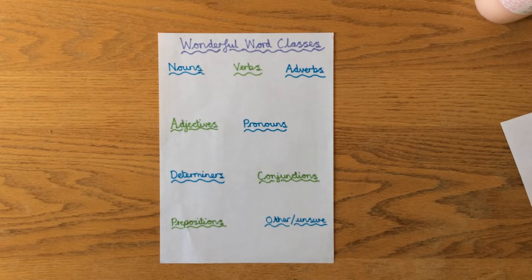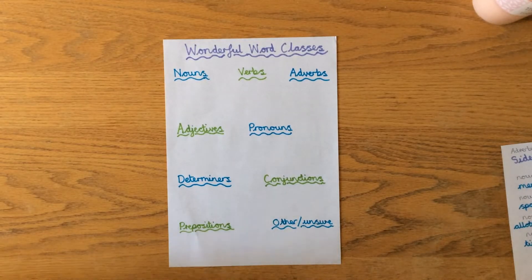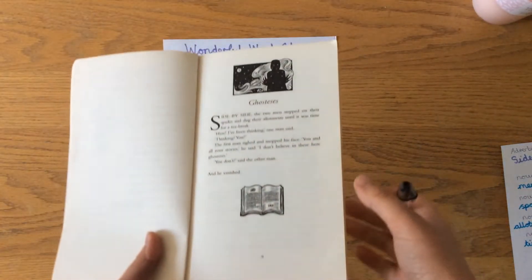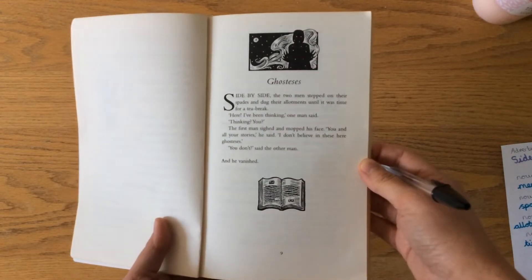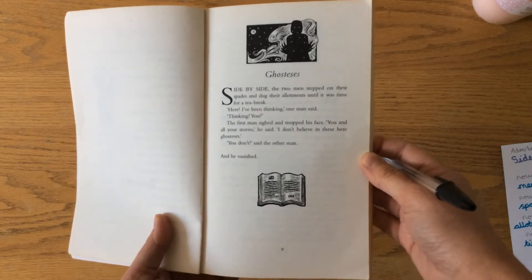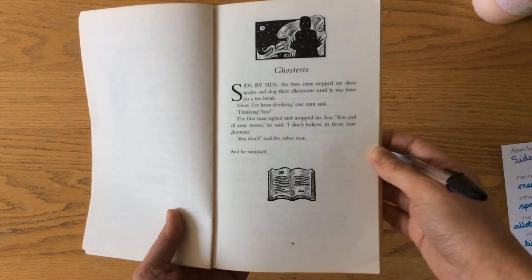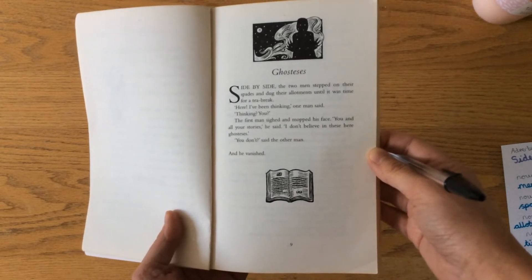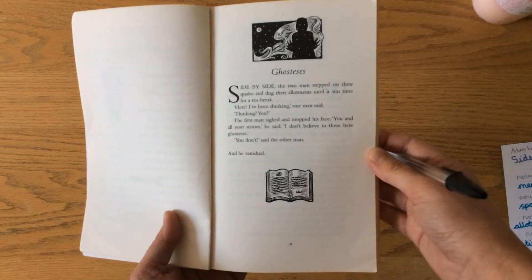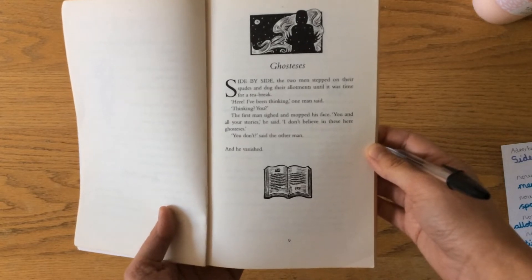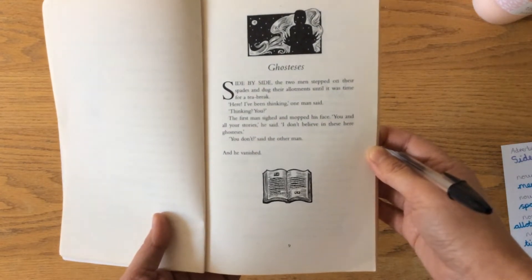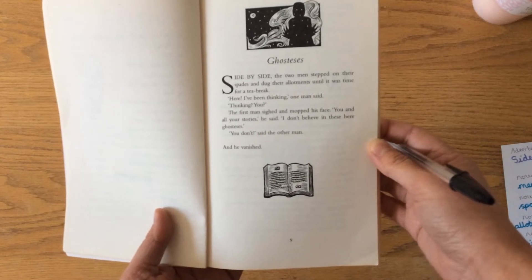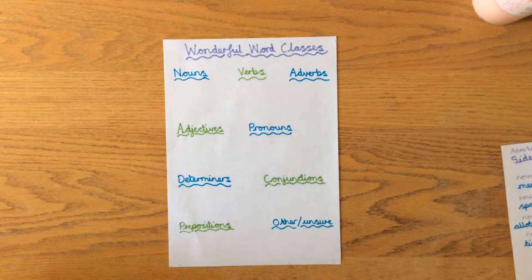Pause the video now and make yourself a list of all the different word classes. Hopefully you've got your list now. The next thing you're going to do is open your book onto a page — I've chosen the first story — and just read it first of all. This is called 'Ghostesses' — I think it's a play on words with 'hostesses.' Side by side, the two men stepped on their spades and dug their allotments until it was time for a tea break. 'Here, I've been thinking,' one man said. 'Thinking?' The first man sighed and mopped his face. 'You and all your stories,' he said. 'I don't believe in these ghostesses.' 'You don't?' said the other man — and he vanished.